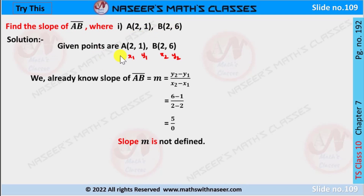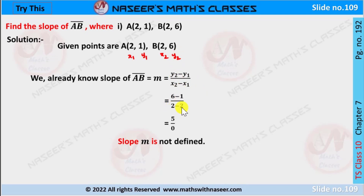The given points are A(2, 1) and B(2, 6). The coordinates are x1, y1 for A and x2, y2 for B. We know the slope formula is M = (y2 - y1) / (x2 - x1). Here y2 = 6, y1 = 1, x2 = 2, x1 = 2. We get (6 - 1) / (2 - 2) = 5/0. It is not defined because division by 0 is not possible. So slope M is not defined.